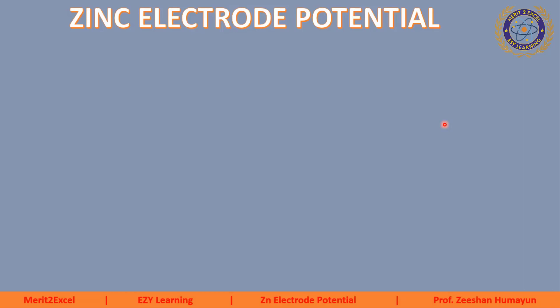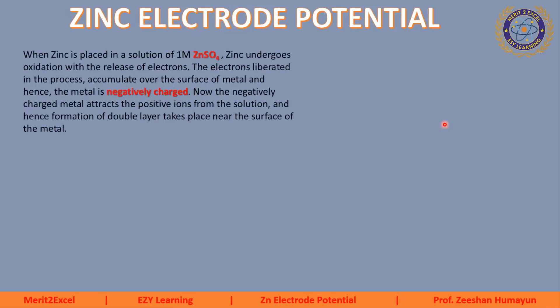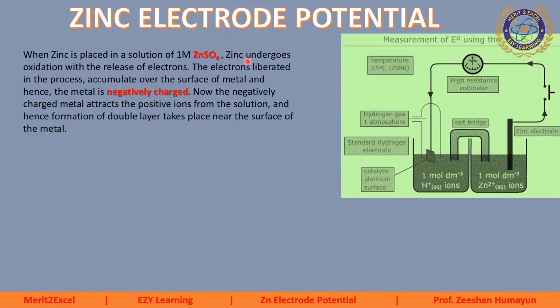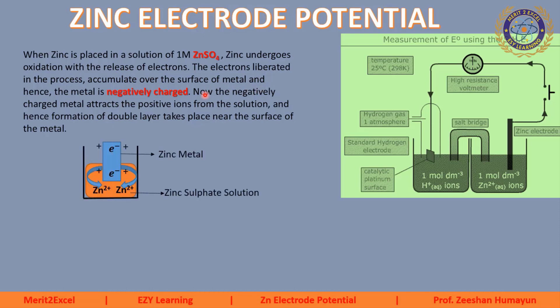Yeh topic complete hua standard hydrogen electrode. Ab agle topic ki taraf chalte hain jis ka naam hai zinc electrode potential. Exam mein is ka bhi question banta hai. Sab se pehle dekhte hain ke zinc electrode potential banega kaise: when zinc is placed in a solution of one molar zinc sulfate, yahan jo electrolyte hai woh zinc sulfate hai. Zinc undergoes oxidation with release of electrons. The electrons liberated in the process accumulated over the surface of metal and hence the metal is negatively charged.